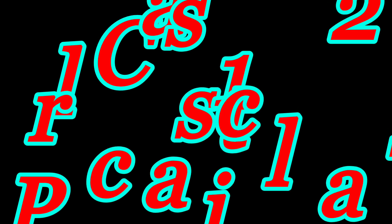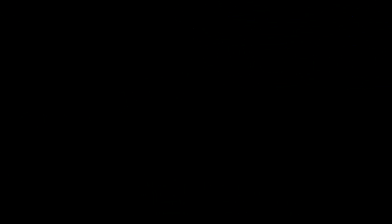And also subscribe our channel if you want to achieve full marks. The objective of this video is to find the focal length of a convex lens by plotting graphs between u and v, or between 1 by u and 1 by v. u stands for the distance of the object from the lens and v for the distance of the image.